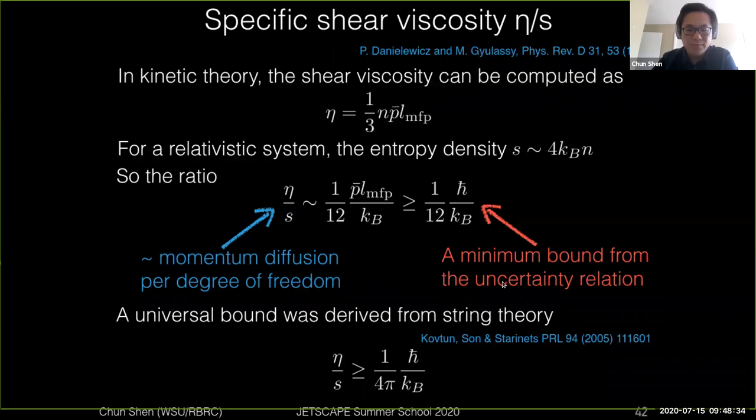A more robust calculation from string theory gives you the ratio of about one over four pi times h-bar over kb for any strongly-coupled systems. So this means that this ratio is kind of universal for fluids, and it needs to be larger than these one over four pi values.